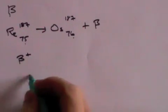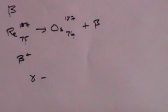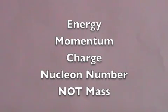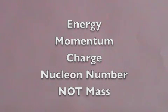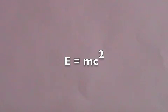Finally, gamma emission comes from nuclei which have too much energy. The gamma rays are high-energy electromagnetic rays, and they carry energy away from a high-energy nucleus. Whenever you have fission or radioactivity, some things will be conserved: energy, momentum, charge, and the nucleon number. But mass is not conserved, and that's how we get energy — because mass is converted into energy by the formula E equals MC squared.